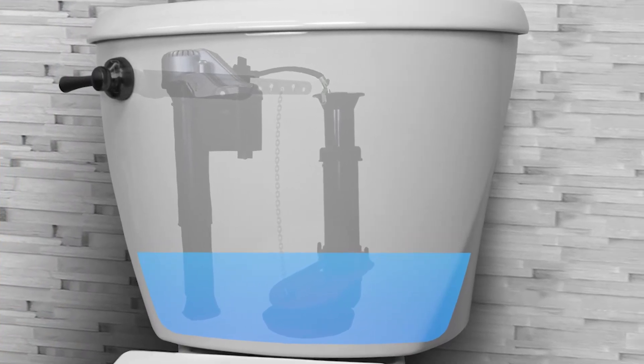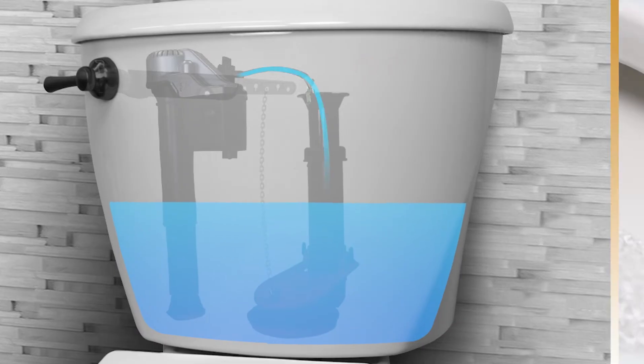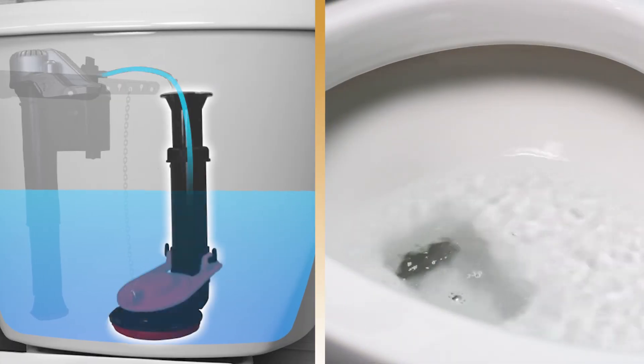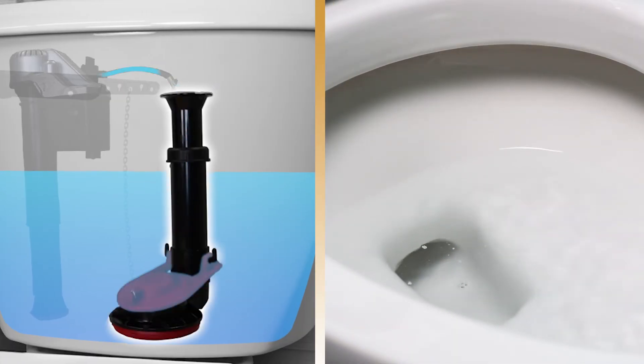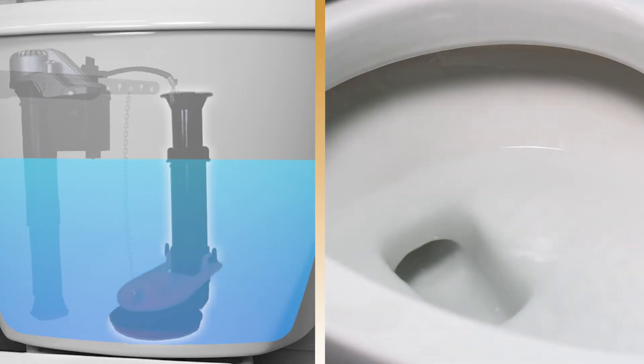The fill valve routes water to two important places: into the tank and through the refill tube and down into the overflow tube. The overflow tube transports some water into the bowl, allowing it to be partially filled for the next use.